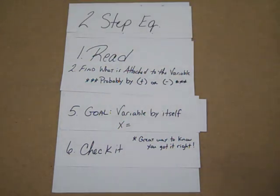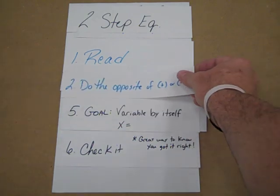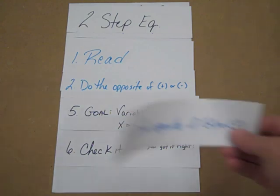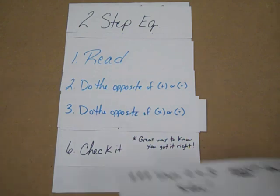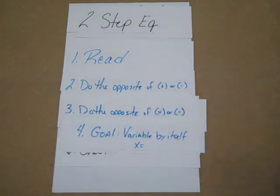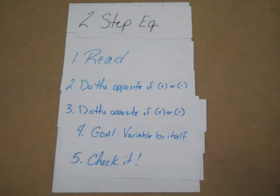For two steps, the steps might be similar. We're going to read it. We're going to do the opposite of the operation of a positive and negative. We're then going to do the opposite of multiplication and division. Steps two and three must be done to both sides. Our goal is going to be getting our variable by itself. And step five is we want to check it — and again, that's optional.